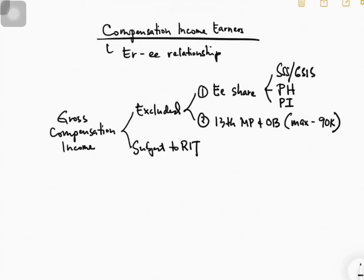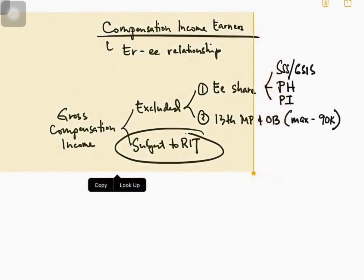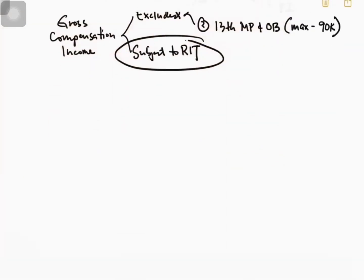Now we jump to the amount subject to regular income tax. Once you get that value, you will transfer it to your regular income tax model. You will have gross compensation income subject to regular income tax, and then you will deduct your allowable deductions to get your taxable income.